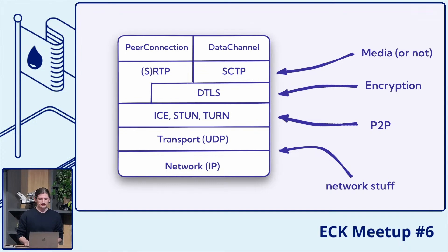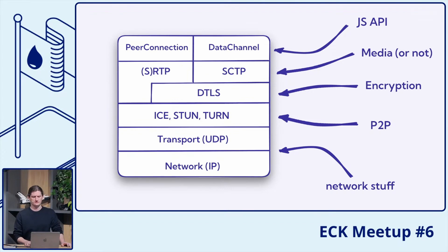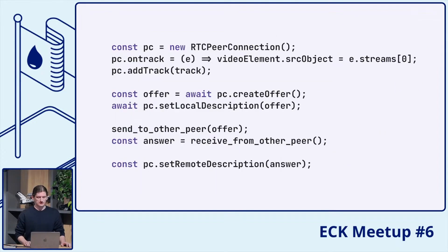On the other hand, we have the protocol called SCTP, which we can use to relay non-media data over WebRTC — but we're not going to dive into that today. There are also high-level JavaScript APIs: peer connection for media, and data channel for non-media stuff. Let's take a look at how the peer connection API looks. This is a snippet in JavaScript that you can run in the browser, and it allows us to establish a peer-to-peer connection with some kind of other peer — maybe a browser or maybe a native implementation.